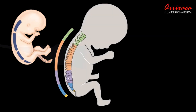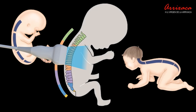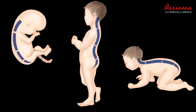This curvature presented by the newborn should be taken into account when conducting examinations of the child's spine. As they grow and begin to sit, crawl, and stand, secondary curves develop, particularly in the cervical and lumbar regions. These curves help to balance the weight of the head and trunk, allowing for efficient movement and posture. Physiological curvature is crucial for maintaining a stable and balanced spine, as it helps distribute mechanical forces and reduce stress on the spinal structures.